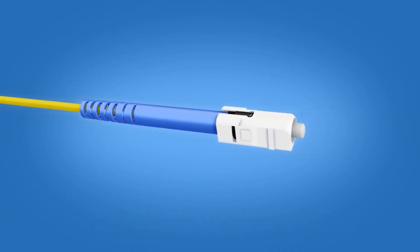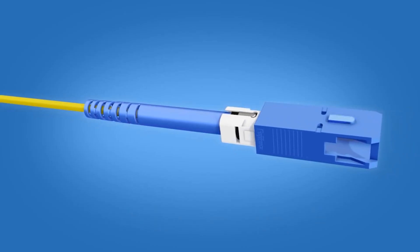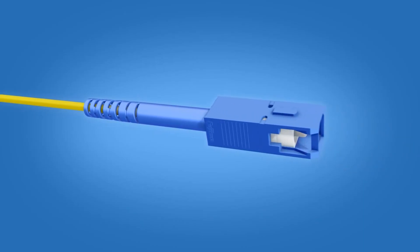Slide the connector housing onto the connector body. The key on the housing and the key on the boot should align. Push until a click is heard.